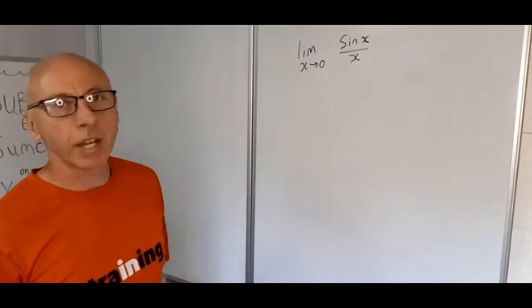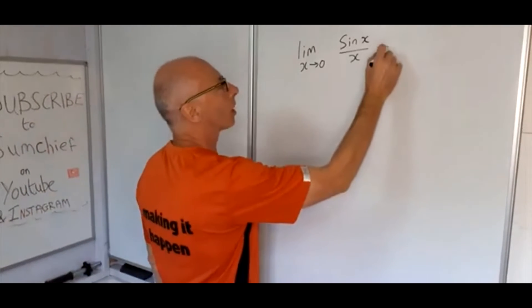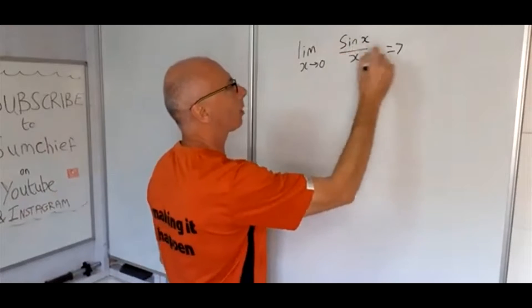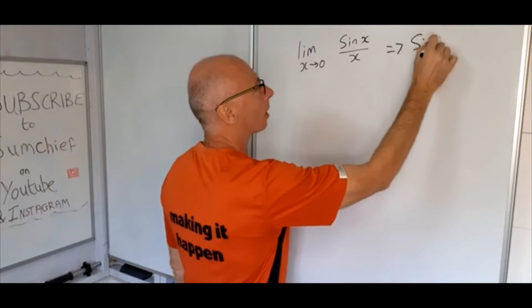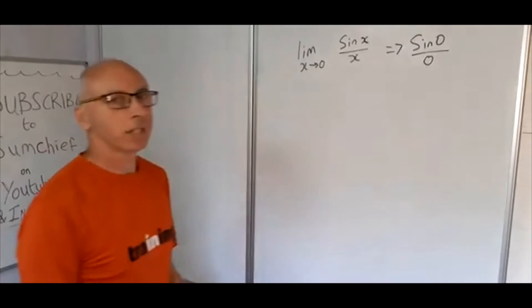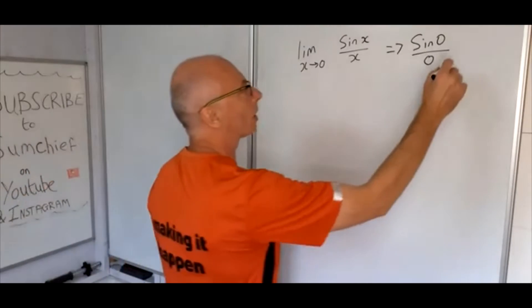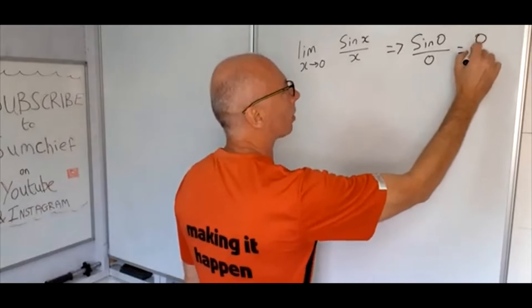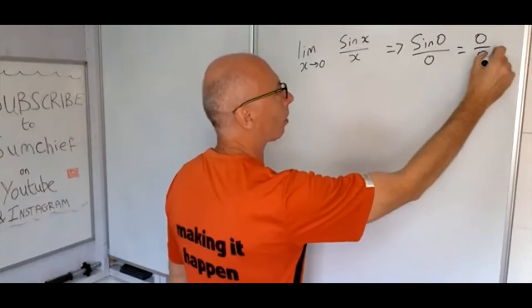Let's plug that in and see what we get. So we plug in zero, we get sine of zero over zero. Obviously this is no good to us, it's basically a case of zero over zero. So we don't know what that's going to mean.